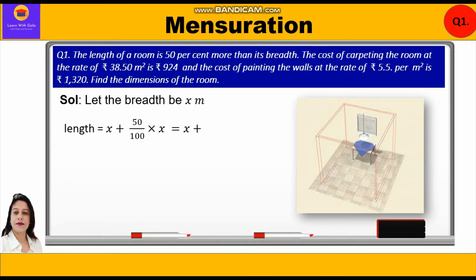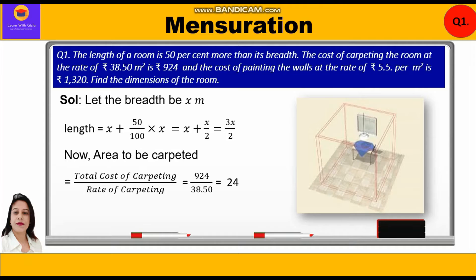Let the breadth be x meters. So length will be x + 50% of x, which equals x + x/2. Taking LCM, we get (2x + x)/2 = 3x/2. So length is 3x/2. Now, area to be carpeted equals total cost of carpeting divided by rate of carpeting: 924 ÷ 38.50 = 24 meters square.